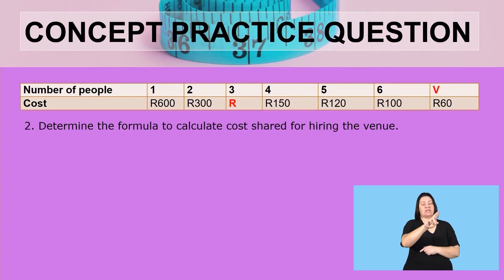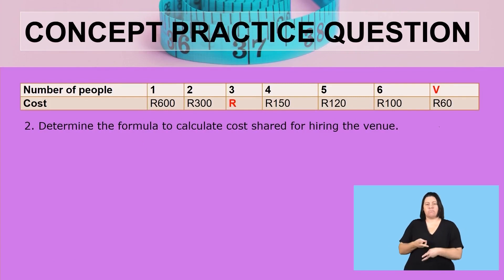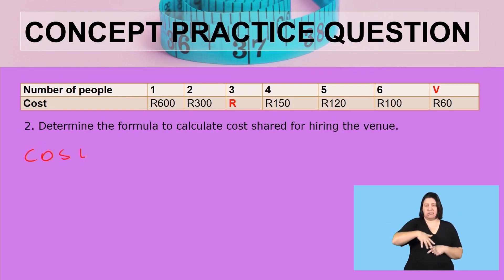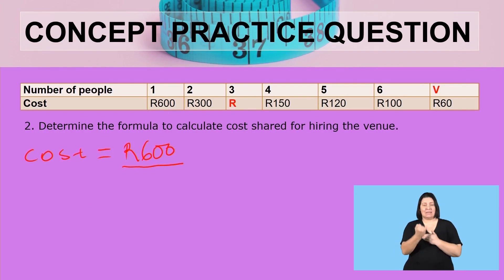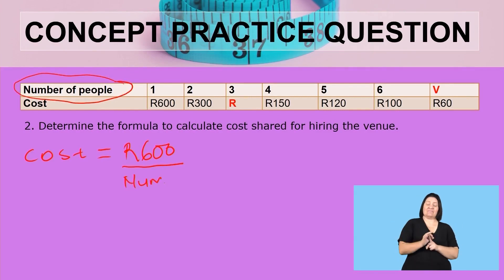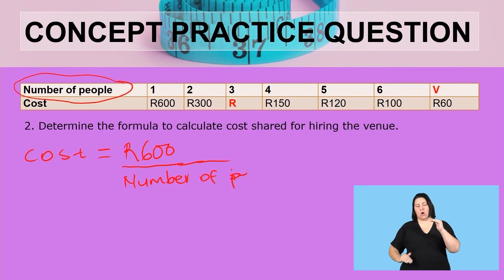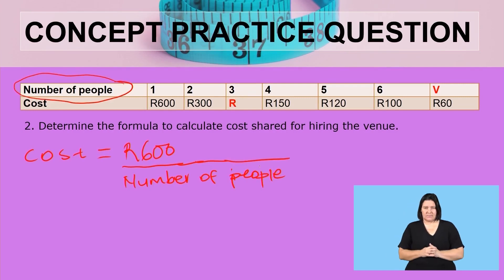The next question: determine the formula to calculate the cost shared for hiring the venue. The cost equals 600 rent divided by the number of people. We don't become specific, so that when the number of people increases, we can substitute with any value. This is the formula that was required.